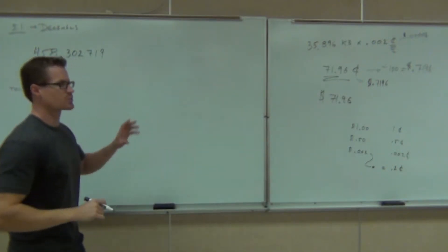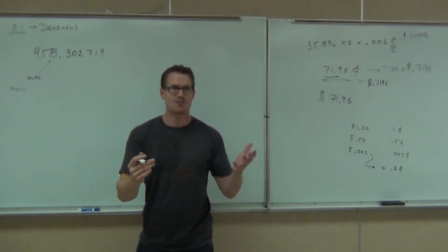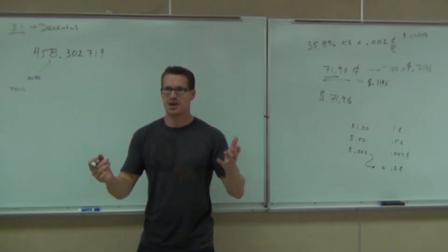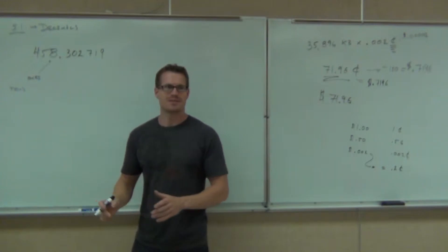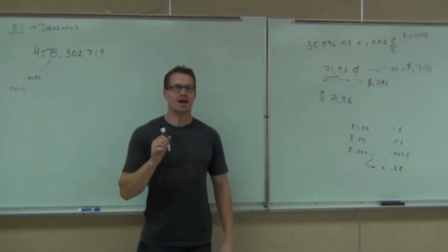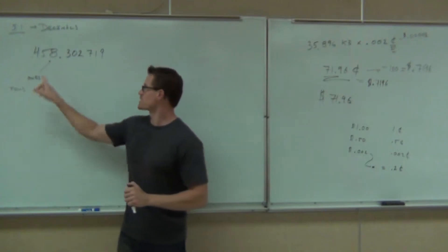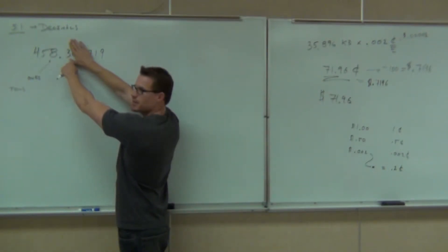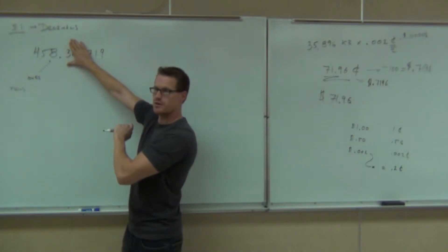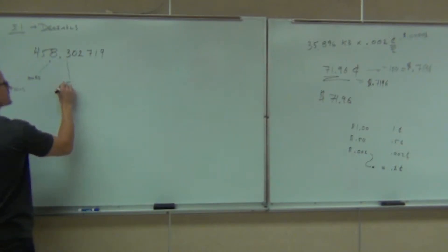Now, when we go on the other side of the decimal, instead of the -s, like ones, tens, hundreds, we have -ths. There's no such thing as one-ths — there's ones, but no one-ths. The first decimal place right here — if you were talking about money, it would take ten of these to make up one dollar. If it takes ten of those, we're going to call them tenths. One-ths are just ones, we already have that. So this place value starts with the tenths.